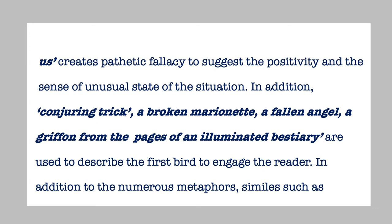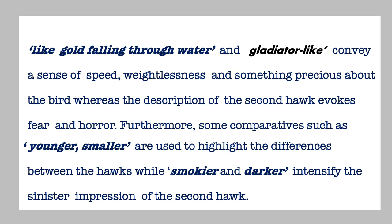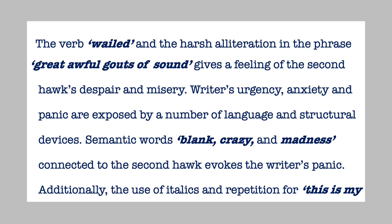In addition, 'conjuring trick,' 'a broken marionette,' 'a fallen angel,' and 'a griffon from the pages of an illuminated bestiary' are used to describe the first bird and engage the reader. Similes such as 'like gold falling through water' and 'gladiator-like' convey a sense of speed, weightlessness, and something precious about the bird, whereas the description of the second hawk evokes fear and horror. Furthermore, comparatives such as 'younger' and 'smaller' highlight the differences between the hawks, while 'smokier' and 'darker' intensify the sinister impression of the second hawk. The verb 'wailed' and the harsh alliteration in 'great awful gulps of sound' give a feeling of the second hawk's despair and misery.